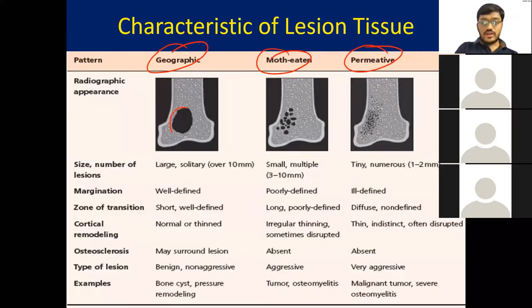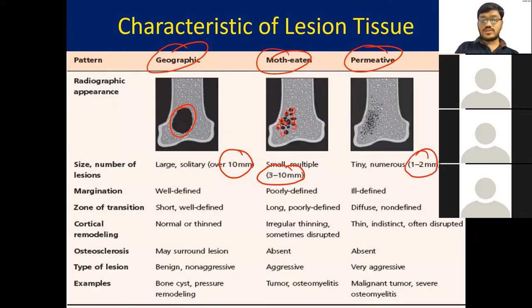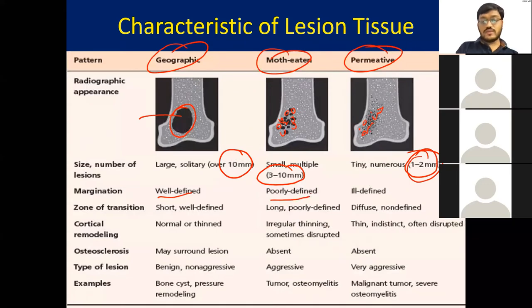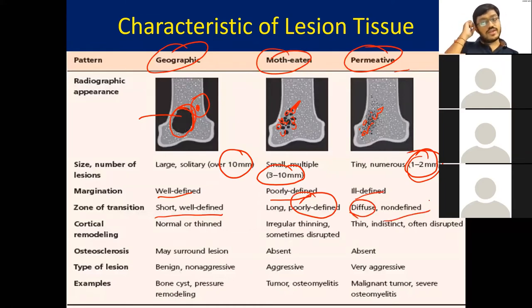The geographic type is a large solitary lesion more than 10mm in size with well-defined margins and a short zone of transition. The moth-eaten appearance involves 3–10mm sized lesions with multiple spots and poorly defined margins with a long zone of transition — seen in osteomyelitis. The permeative type shows 1–2mm pinpoint areas of bone loss with ill-defined, diffuse margins — seen in oral cancer — where you cannot tell where the lesion starts or ends.